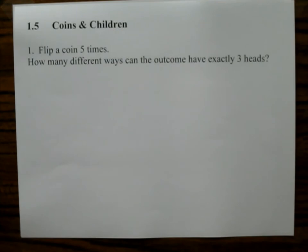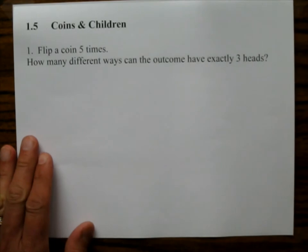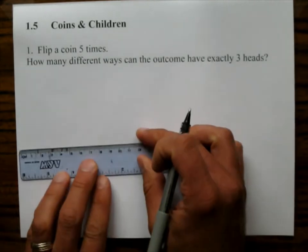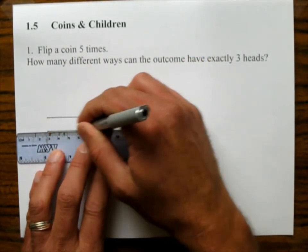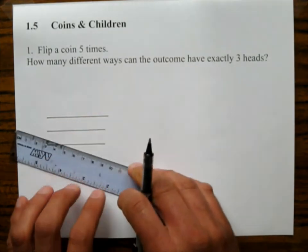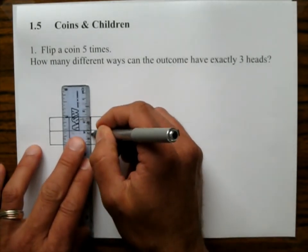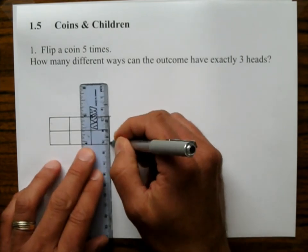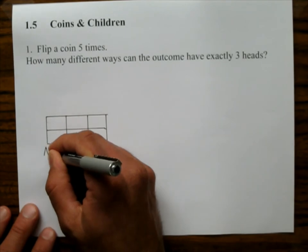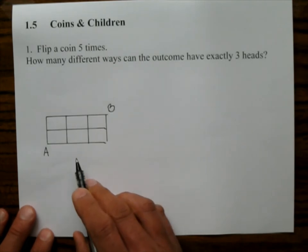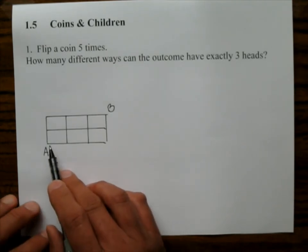Flip a coin 5 times. How many different ways can the outcome have exactly 3 heads? Okay let's go back to when we were doing direct routes and let's just do this problem here. So remember we did this in an earlier lecture. How many direct routes are there from A to B?